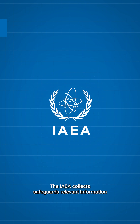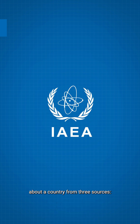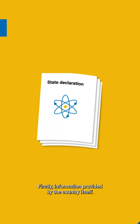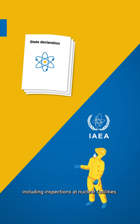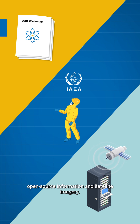The IAEA collects safeguards-relevant information about a country from three sources. Firstly, information provided by the country itself. Secondly, information collected from IAEA verification activities, including inspections at nuclear facilities. And thirdly, other information — for example, open-source information and satellite imagery.